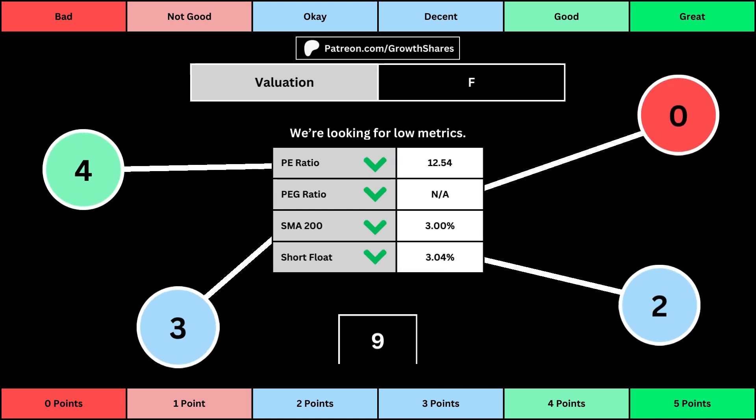This third set of metrics deals with the valuation of the company's stock based on its business. Think of the P/E ratio as a measure of speculation around the stock — we want it low. The PEG ratio adds earnings growth with the P/E ratio. Then the 200-day simple moving average is the average stock price over that period; we want that low because it means we have a cheaper stock price.